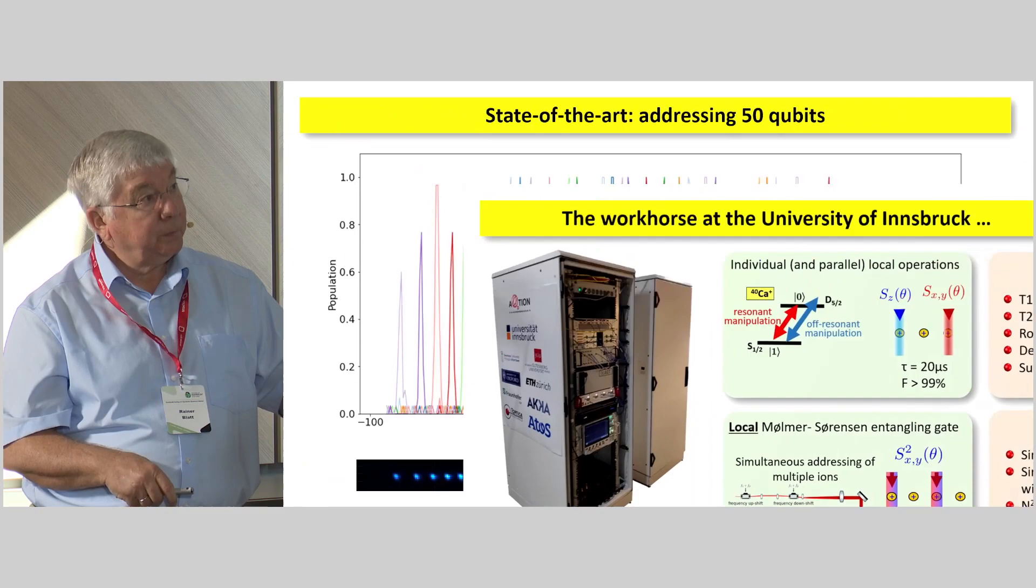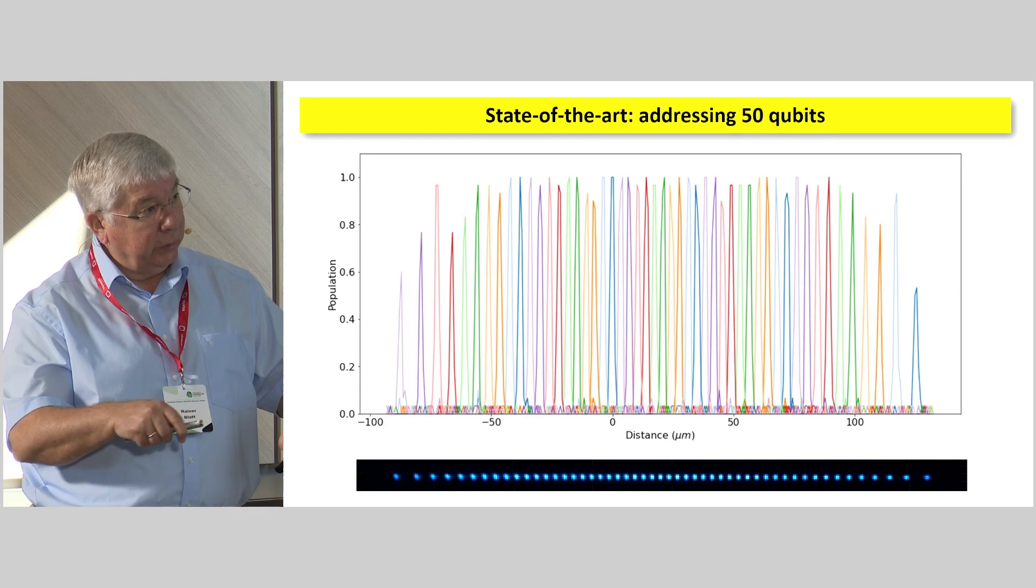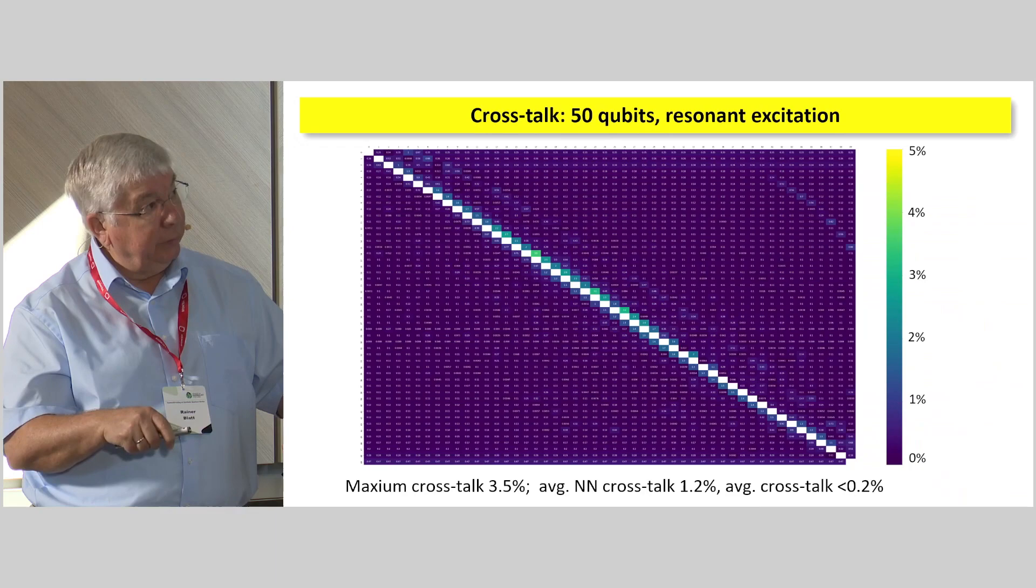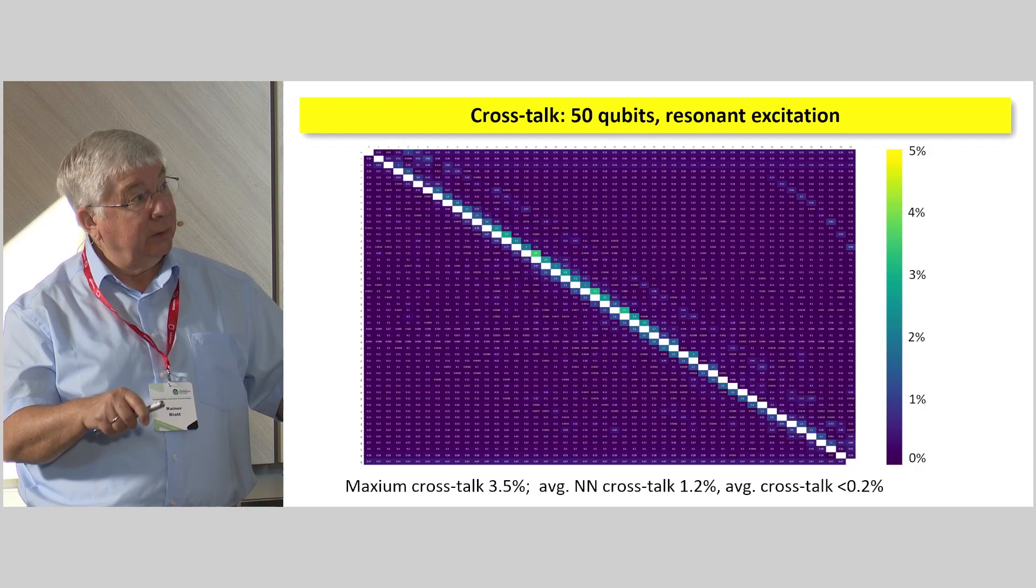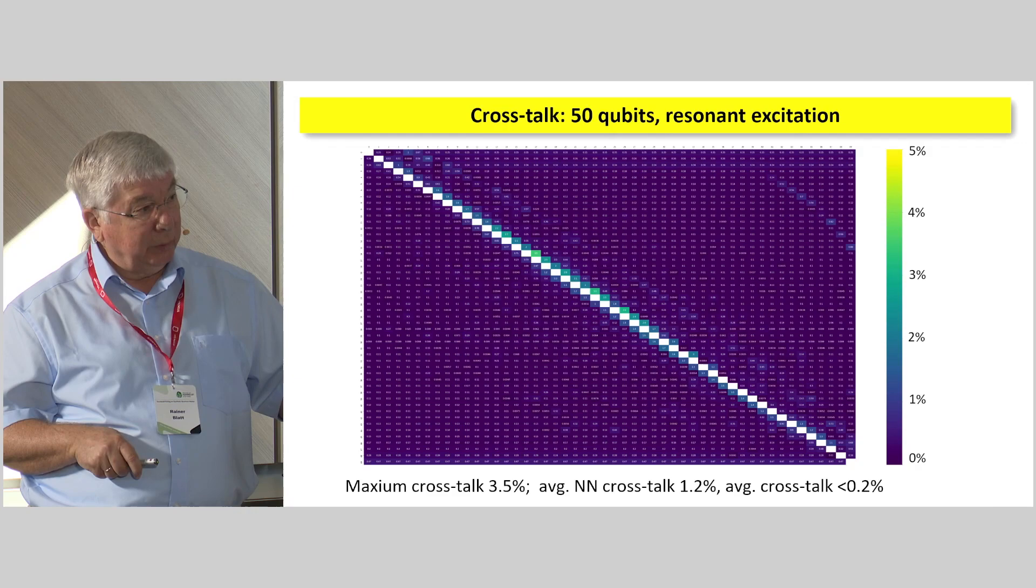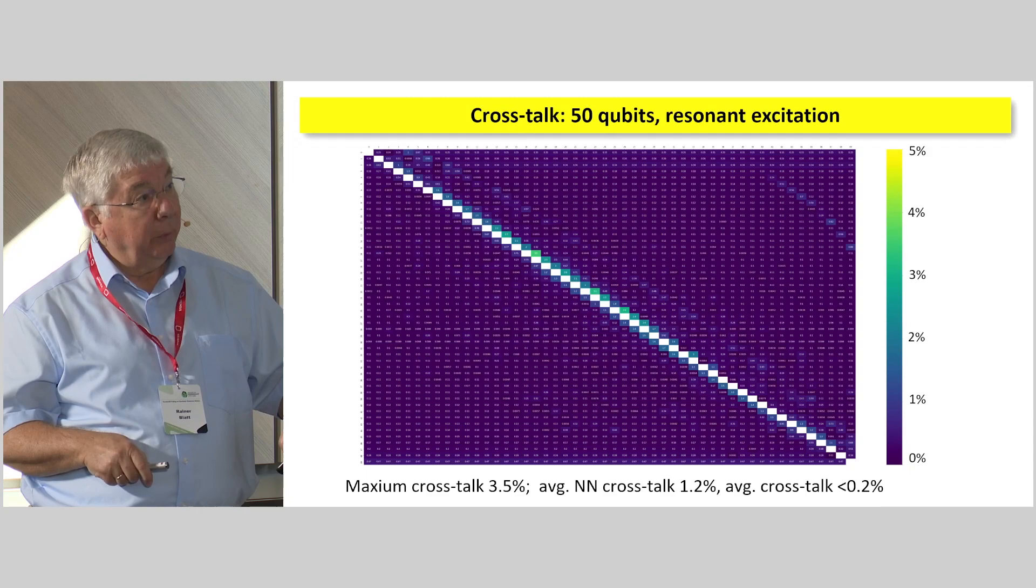Now, this is just to give you an idea. We can individually address all of these ions. Of course, it's necessary. But you can actually see these are the Gaussian beams. They may talk to the neighboring things. And if you just look here at the crosstalk matrix, you're not supposed to read these numbers. They are all small numbers right here. But on the average, the nearest neighbor crosstalk is about 1.2%, and the average crosstalk is less than 0.2% that we have with the beam pointing capability that we have.